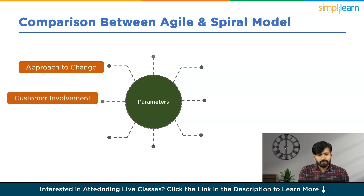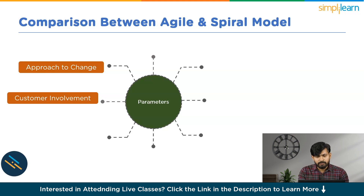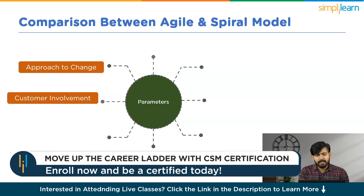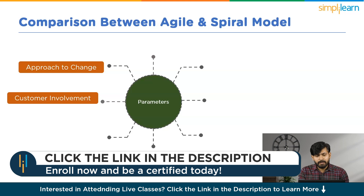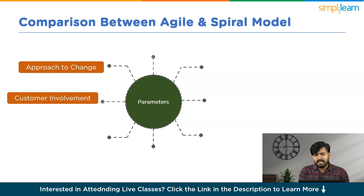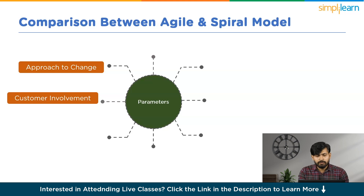The second parameter is Customer Involvement. The Agile model places significant emphasis on continuous customer involvement throughout development. Stakeholders, including customers and end users, are considered an integral part of the development team. Regular feedback loops, sprint reviews and showcases ensure that customer expectations are continuously aligned with the evolving product, contributing to customer satisfaction. In the Spiral model, customer involvement is facilitated through regular reviews and evaluations. Each iteration allows for customer feedback, and while the customer may not be involved on a day-to-day basis as in Agile, the structured approach ensures customer input is incorporated at various stages of development.